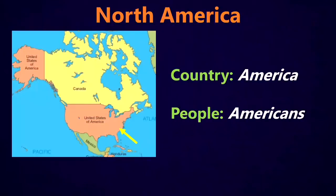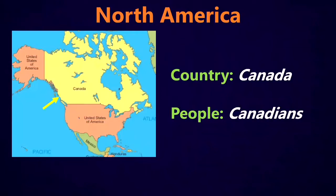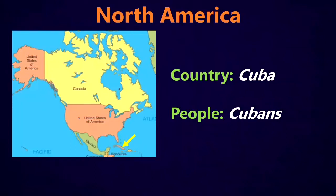For example, in North America we have a few different countries. The first one is America, and we call the people Americans. Another country is Canada, and the people from Canada we call Canadians. We've also got Mexico, and the people from Mexico are Mexicans. And then there's Cuba, and the people from there are called Cubans. And there's Haiti, and the people from there are Haitians.